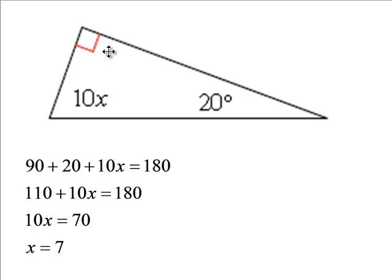This would indicate here, this right angle here is 90 degrees. And then that would mean that 90 degrees plus 10x plus 20 is equal to 180. And then you combine like terms, and then we're subtracting the 110 from both sides, and then we're dividing by 10 and see x is 7.